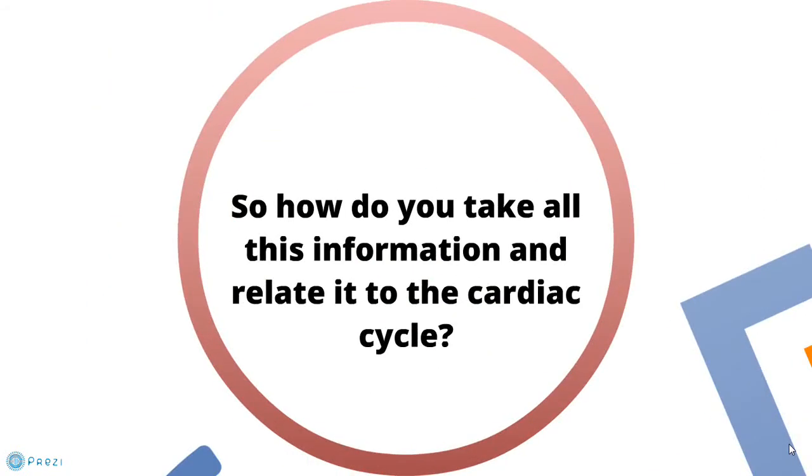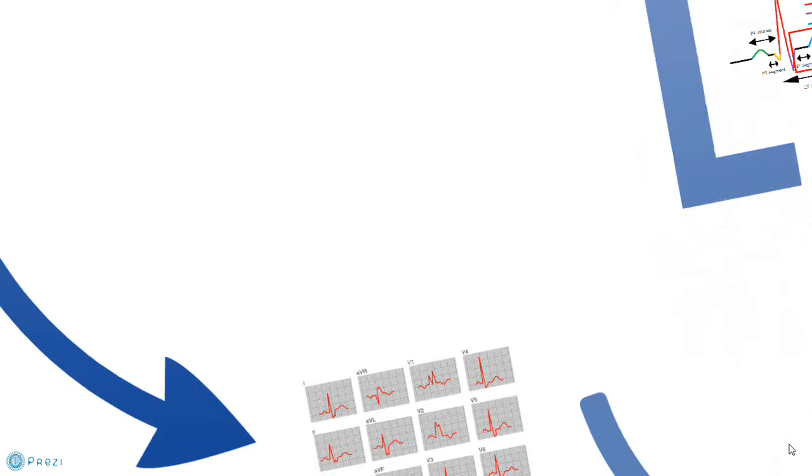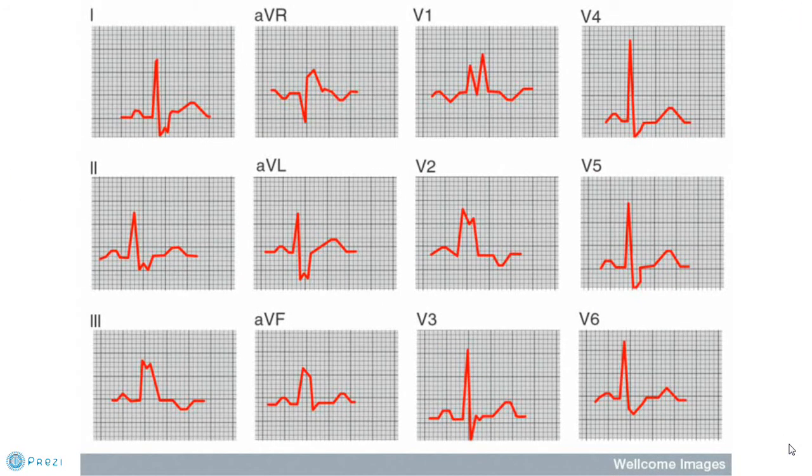So how do you take all this information related to the cardiac cycle? Here is an example of a typical 12 lead ECG. As you can see, there is a lot of information to digest. That is why it is often common that we only view a few leads.